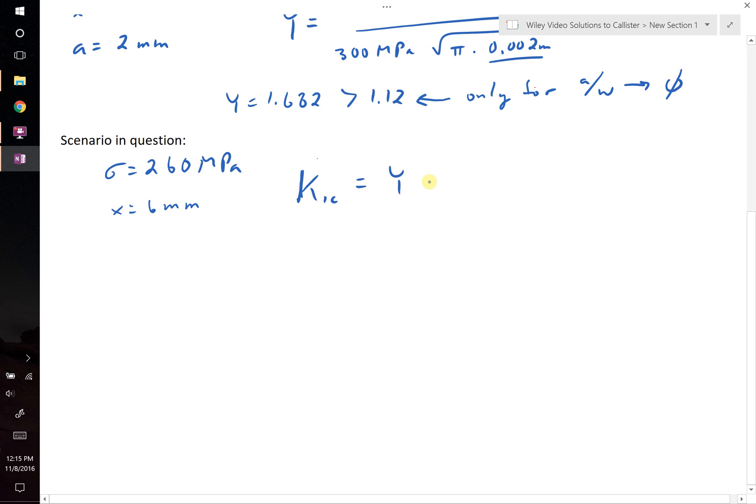K1c equals y times sigma times the square root of pi times ac. We're going to use the same fracture toughness value before, and we're going to use the same y as before.